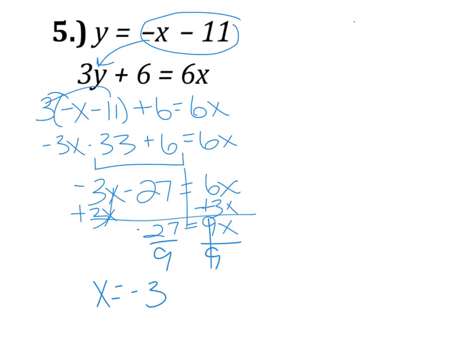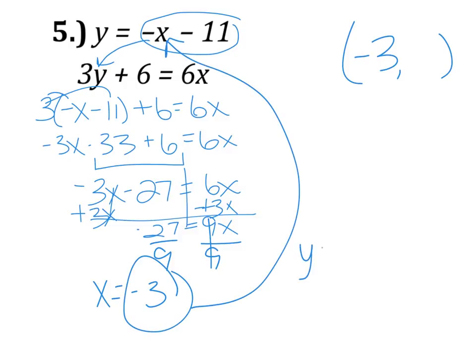Again we are not done. We just know the first part. We need to find Y. So we're going to take that X and plug it back in. Now just be careful. It is Y equals a negative, and then the X. And since our X is a negative 3, what's going to happen is those two negatives will turn to a positive. So this just becomes Y equals 3 minus 11, which will give us negative 8. So our Y value is negative 8.